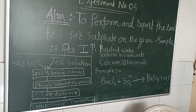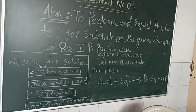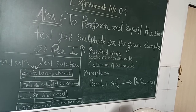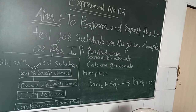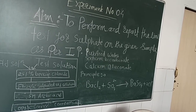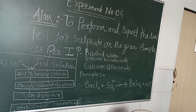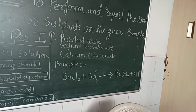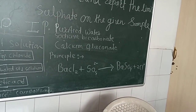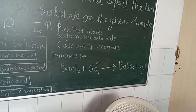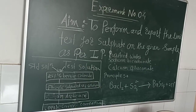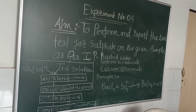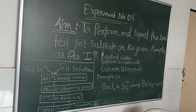The principle behind this limit test is that barium chloride reacts with sulfate ions in the presence of ethanolic sulfate solution to form a precipitate of barium sulfate. Ethanol is used in this experiment to prevent supersaturation.